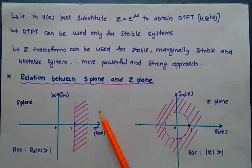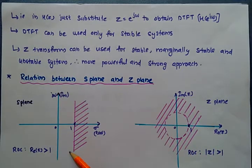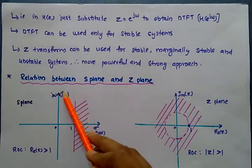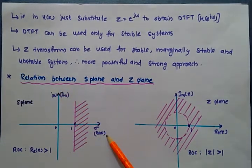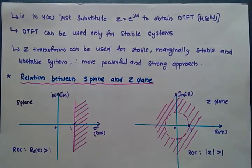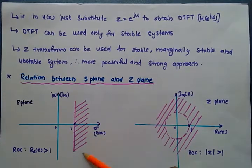Next, we look at the relation between the S-plane and the Z-plane. This figure represents the S-plane, where the real part (sigma) is on the x-axis and the imaginary part (j omega) is on the y-axis. As an example, the region of convergence (ROC) is Re(S) greater than 1, which corresponds to a causal system.